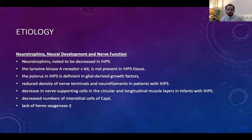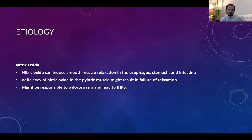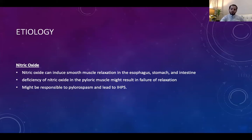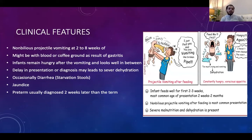There is also a deficiency in glial-derived neurotrophic factor, which is important for maturation and growth of the enteric nervous system. Additionally, nitric oxide — which induces smooth muscle relaxation in the GI system — is found to be deficient in pyloric stenosis, possibly causing pyloric spasm. All of these factors support a multifactorial etiology.